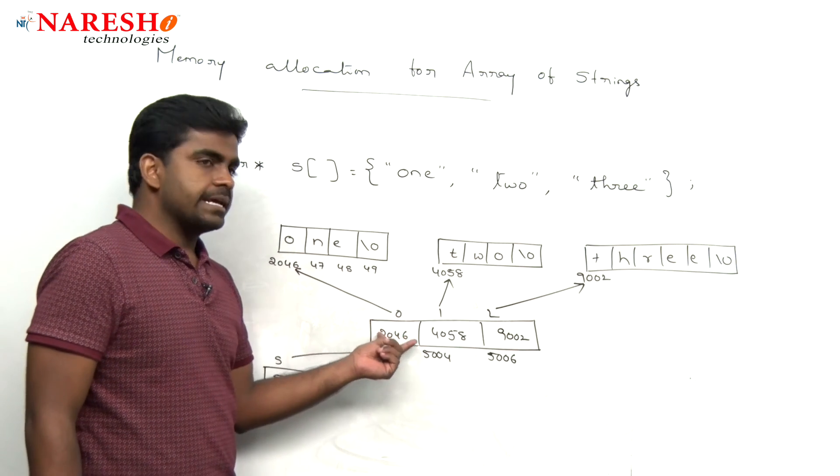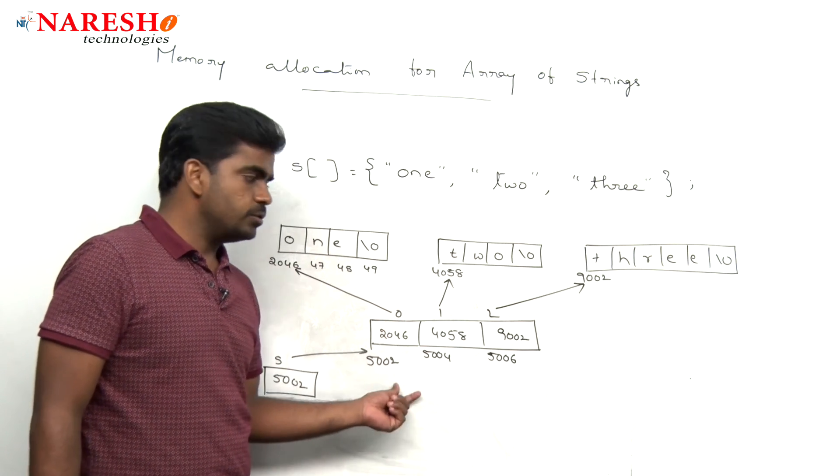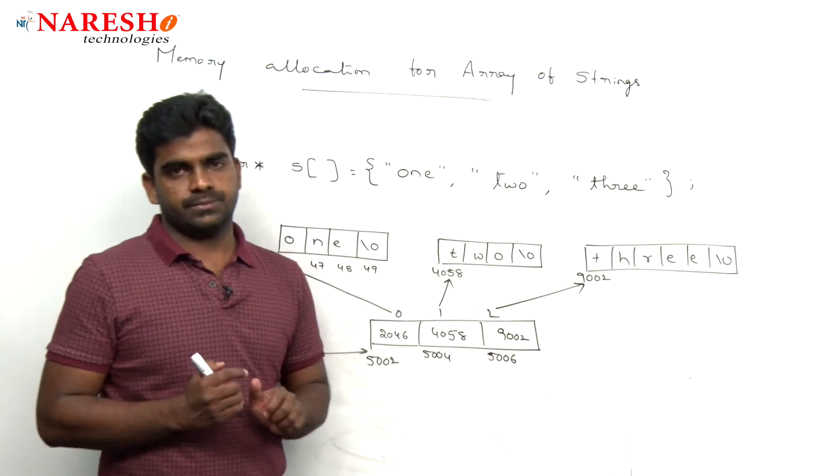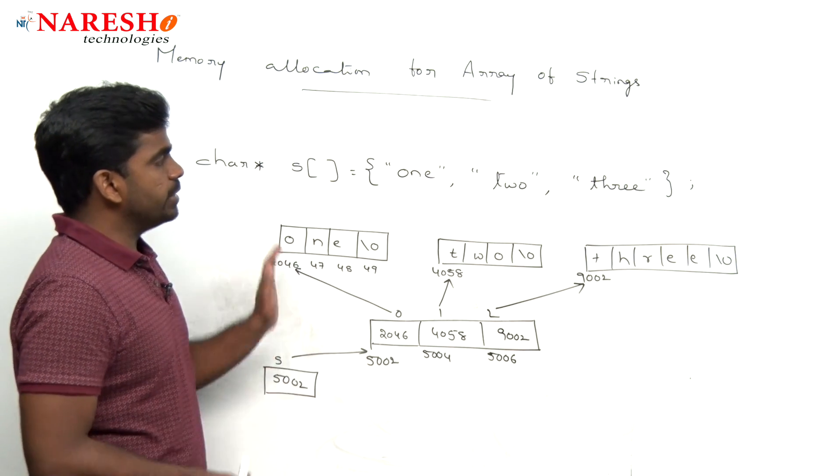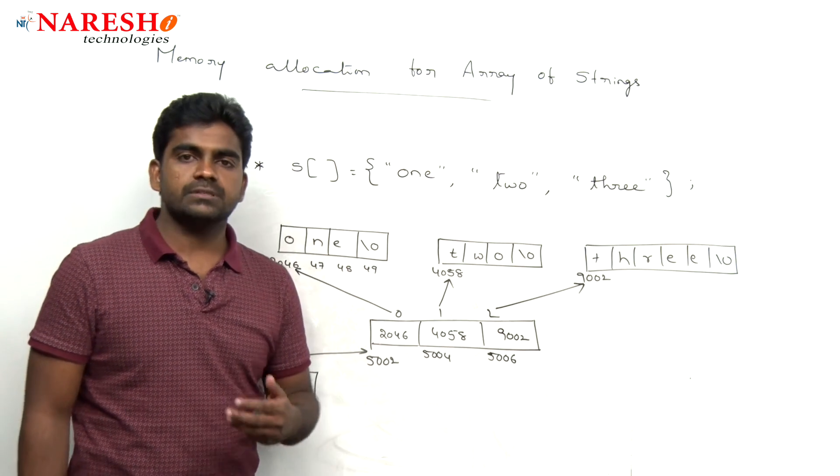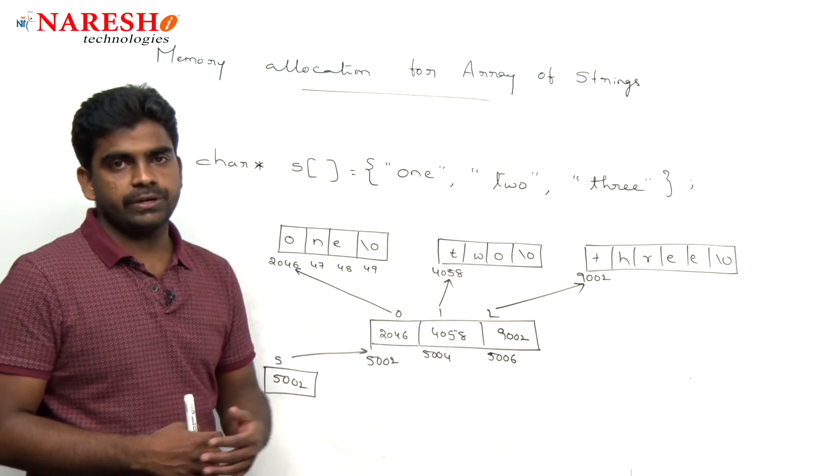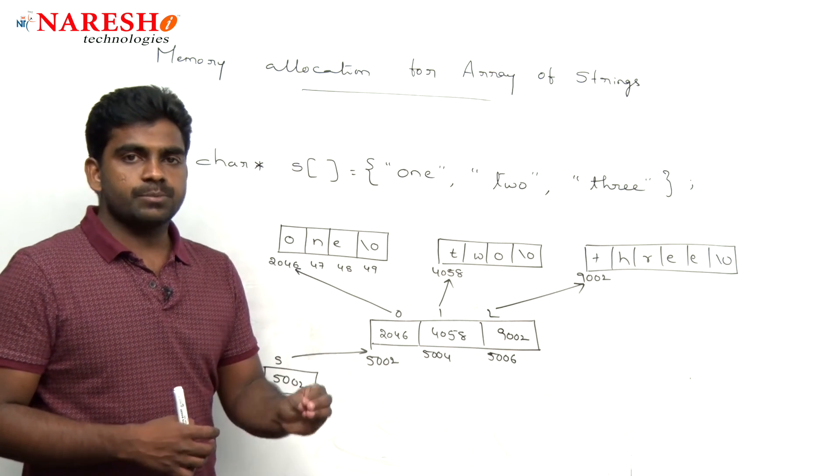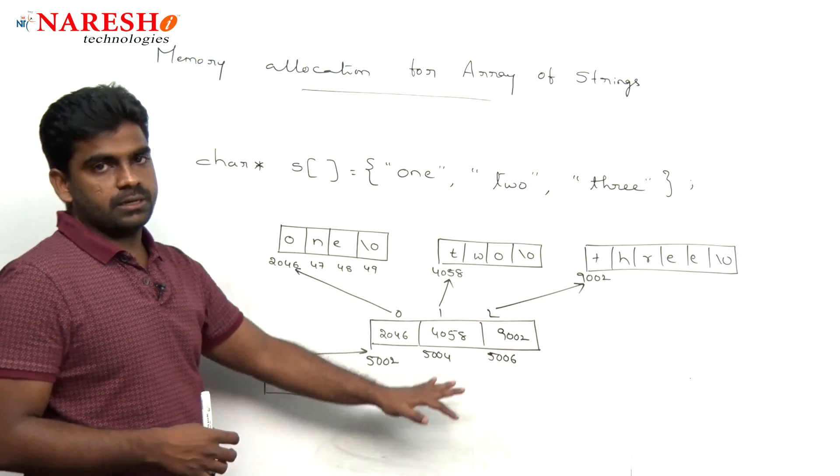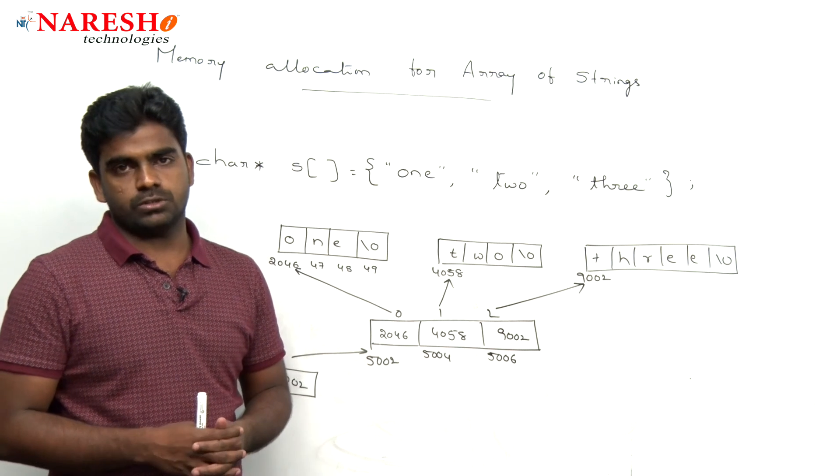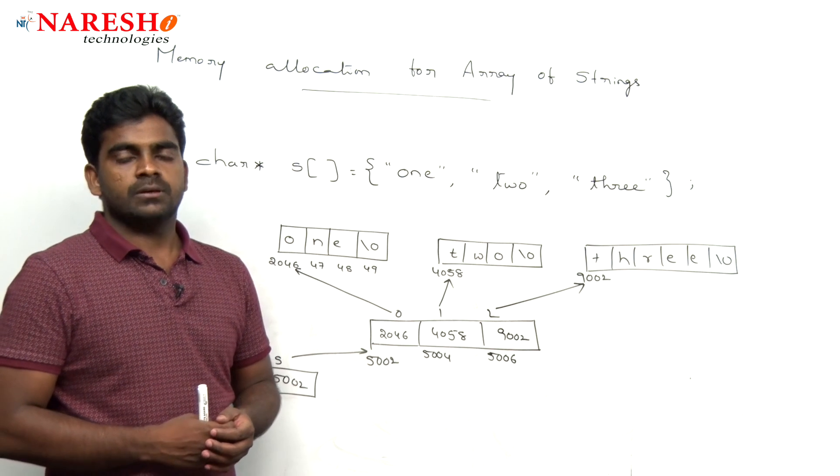So, depends on the size of the data, depends on the data we are storing, we need to mention that locations. This is how memory we are allocating to array of strings. In the coming videos, I will explain how to write the programs using array of pointers concept. Hope you understood. Thank you.